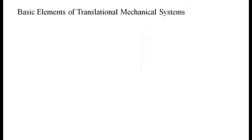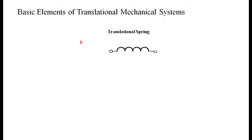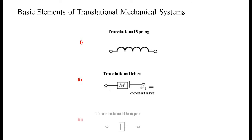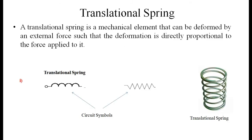The basic elements of a translational mechanical system are: the translational spring, the translational mass, and the translational damper. This video focuses on the study of the spring-mass-damper system.